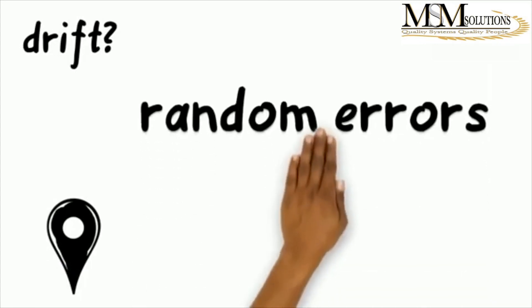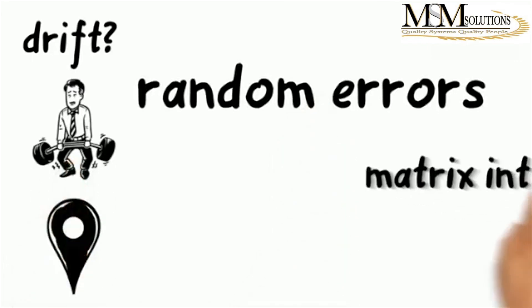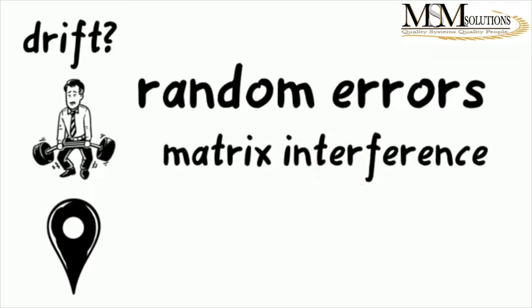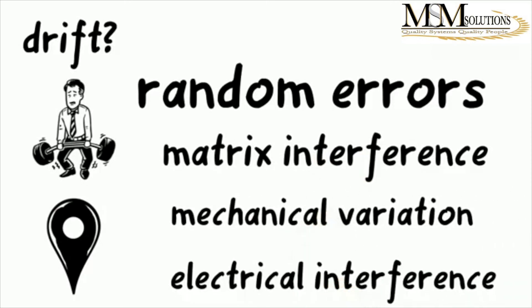When it comes to random errors, which is more difficult, some of these might be due to matrix interferences. But if you're not aware that there is a matrix problem in your method or in your sample, then you will not be able to pick this up. It could be also mechanical variation or even electrical interference. And some of these might not be consistent. That's why you will not be able to pick them up easily. So that makes it even more difficult.